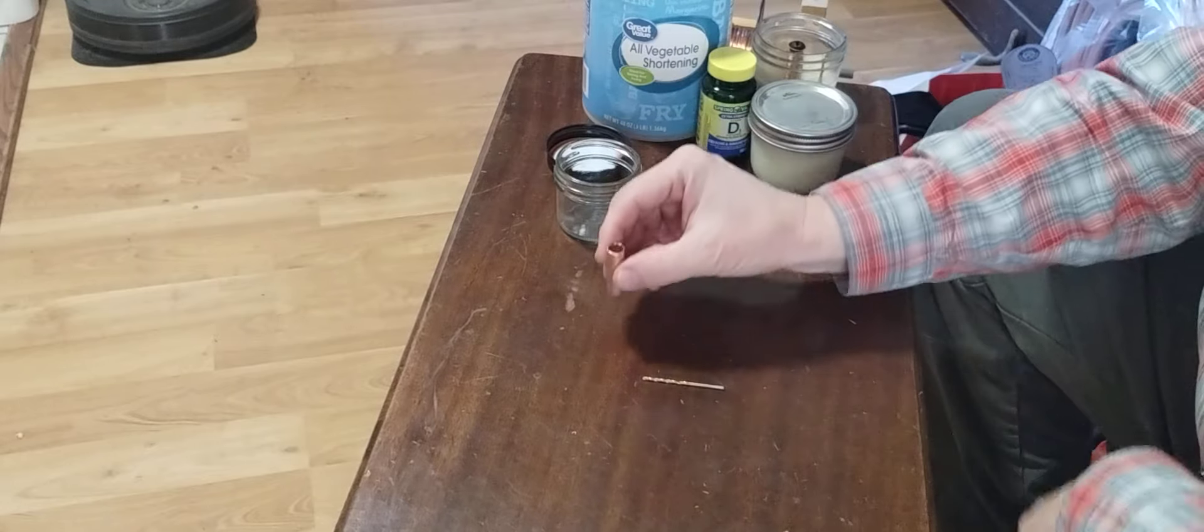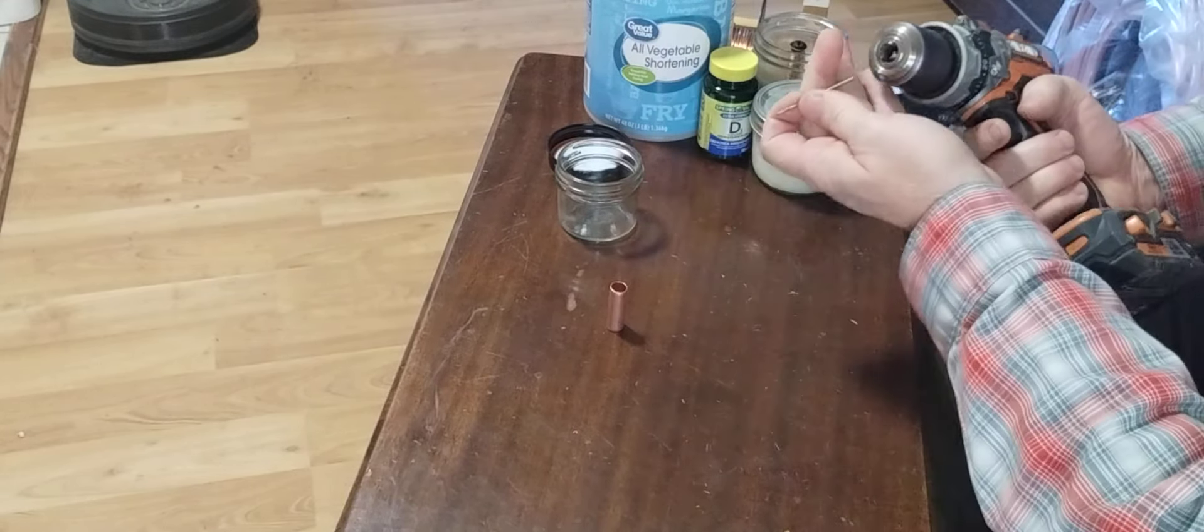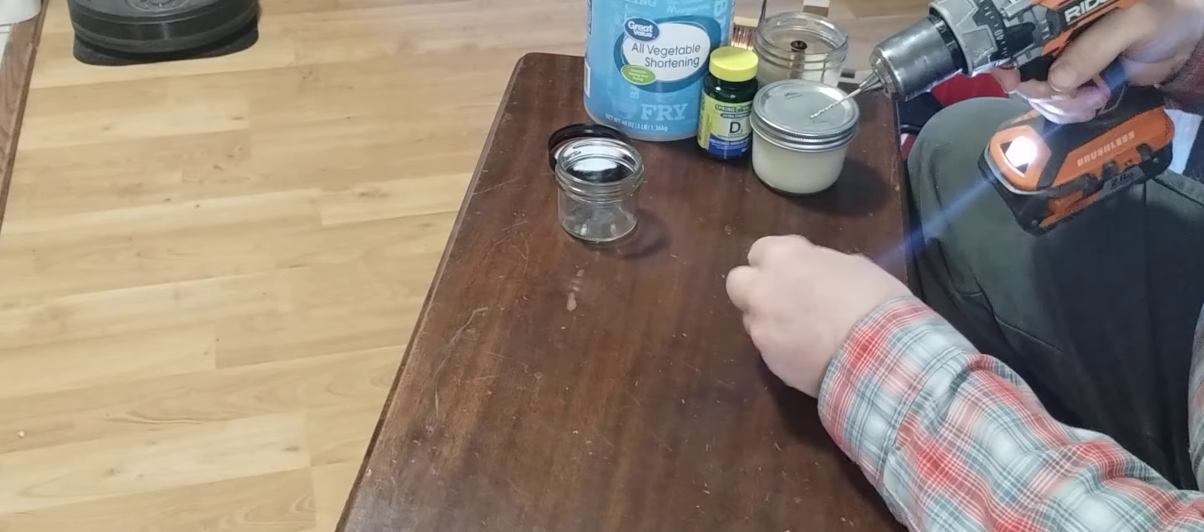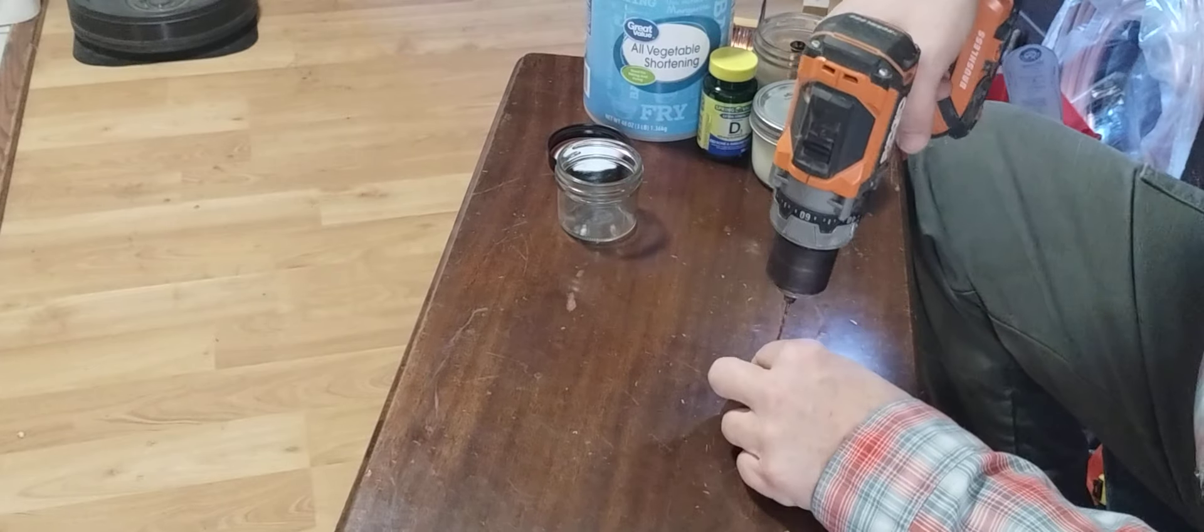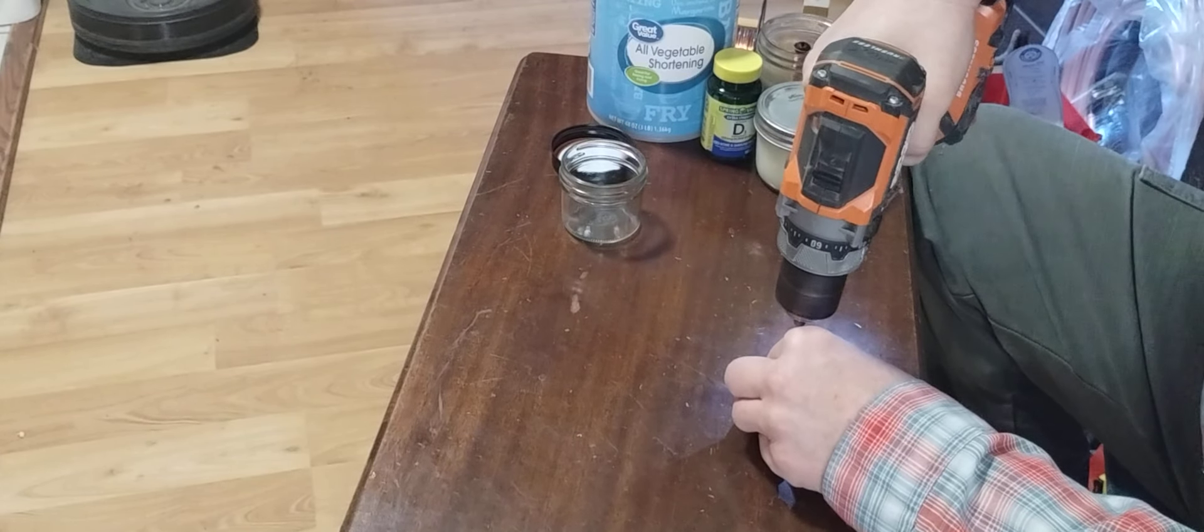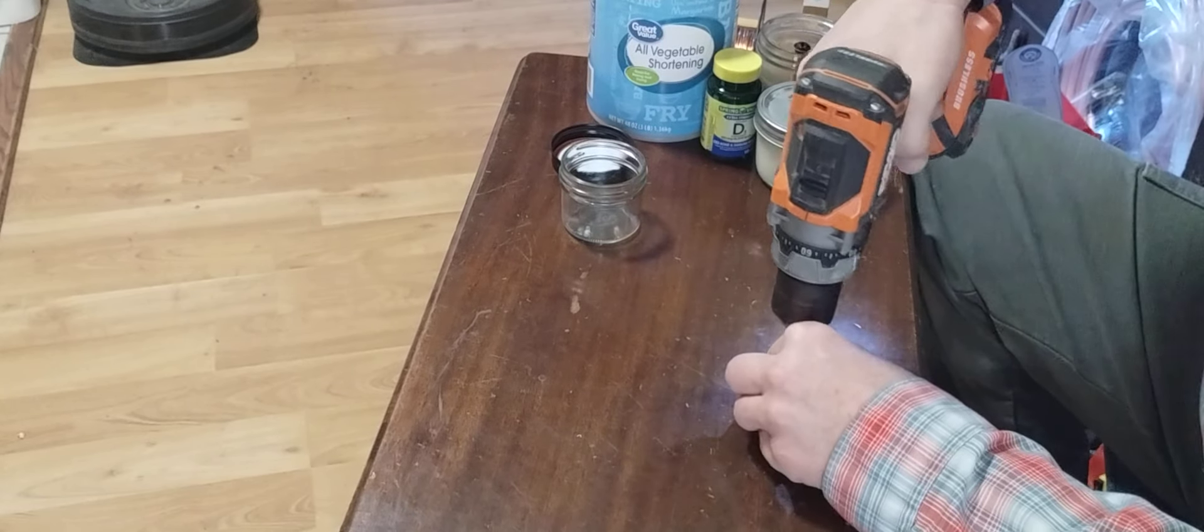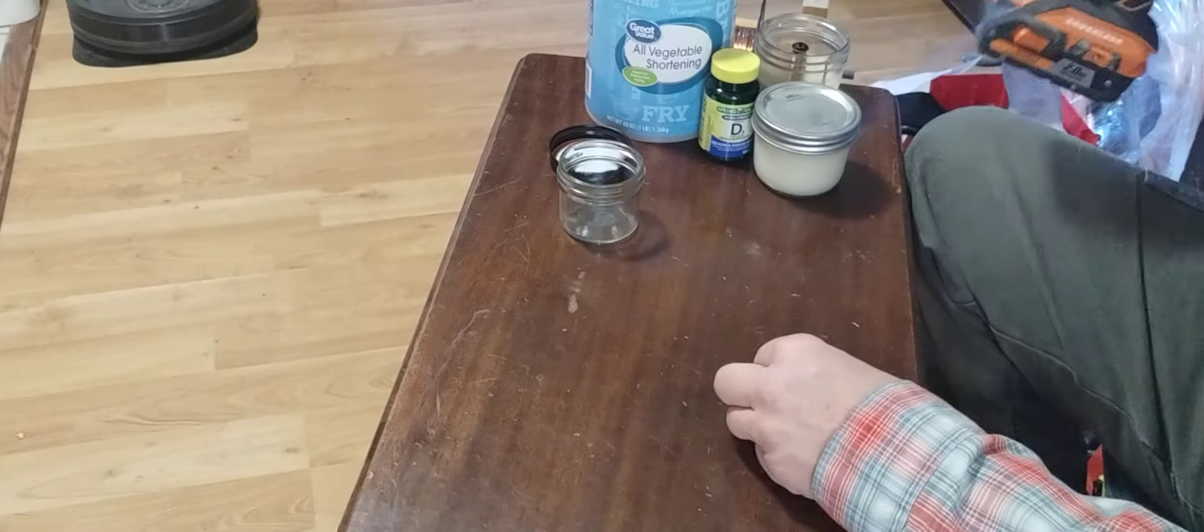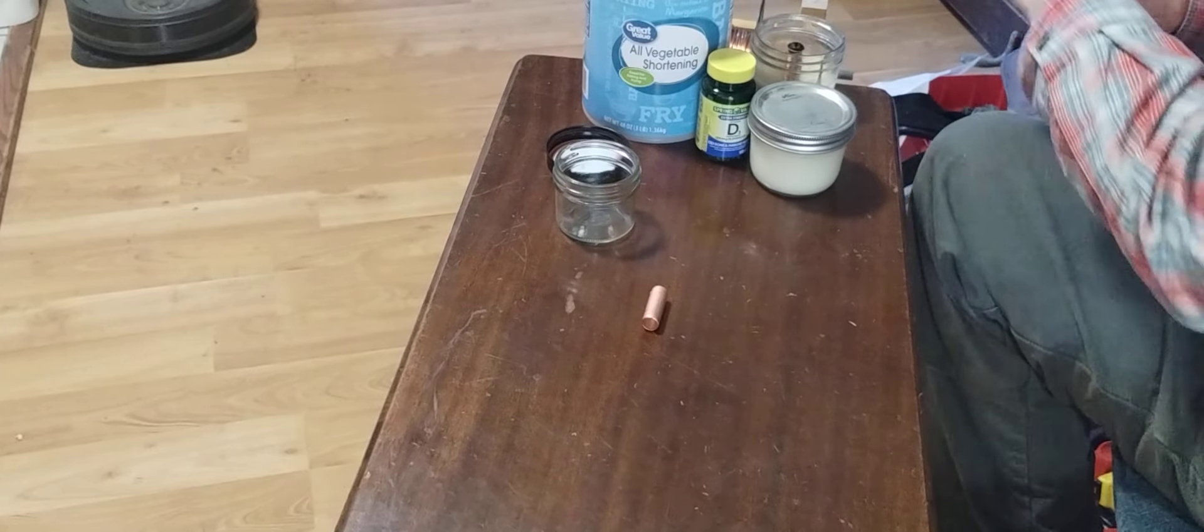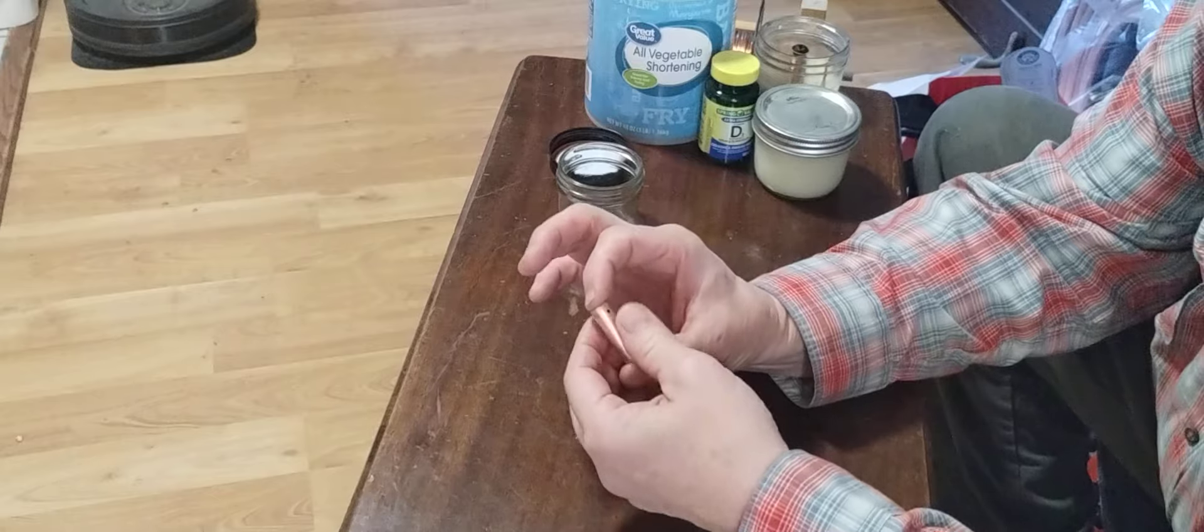There's that. Now your tube is prepared. Almost. Get yourself a little tiny drill bit. I don't know what size it is, it's small, about the size of your wire. Just drill a hole somewhere there. There's a hole.